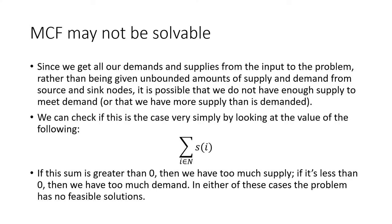One important thing to note is that the MCF is not always solvable. Since we get all supplies and demands from the inputs rather than from unbounded source and sink nodes, it's possible we don't have enough supply to meet demand, or we have more supply than demand. We can check this by summing all supply/demand values s(i) over all nodes. If the sum is greater than zero, there's more supply than demand; if less than zero, there's more demand than supply; if equal to zero, the problem is balanced, which is required.